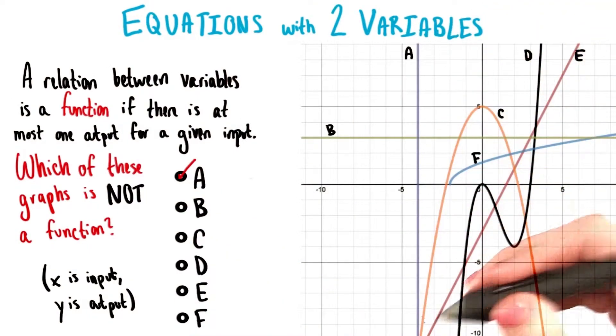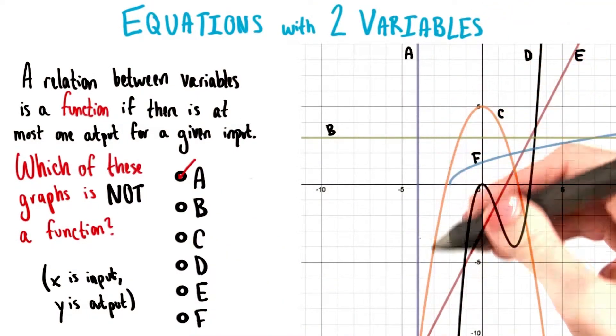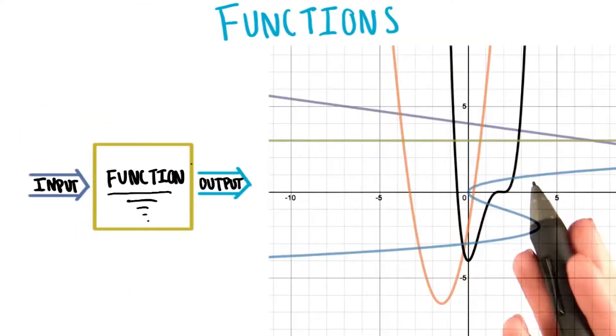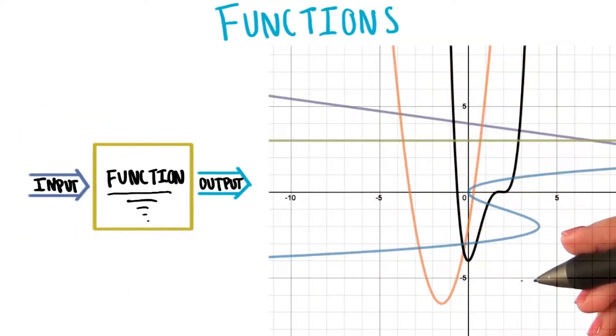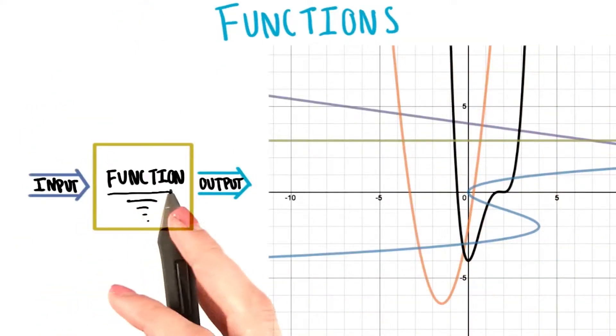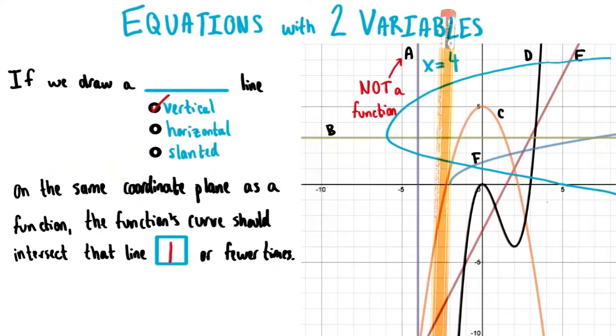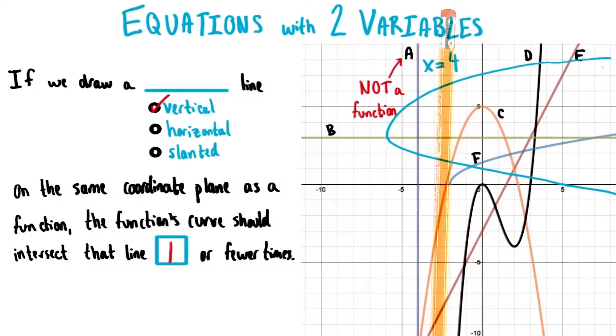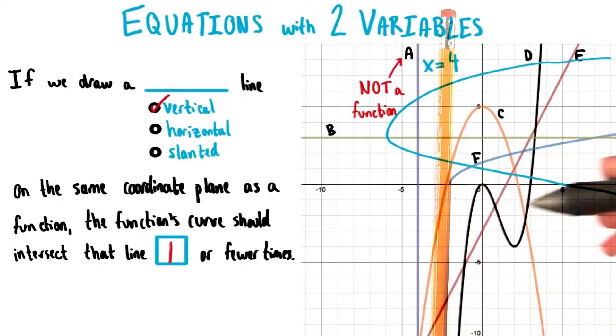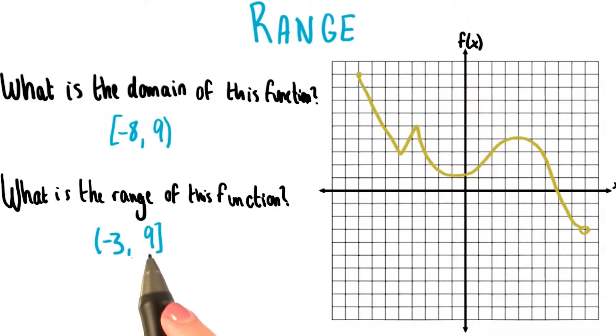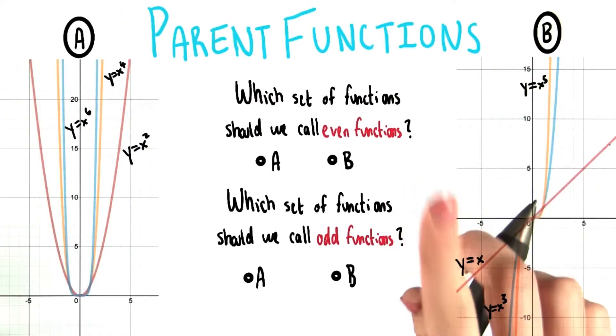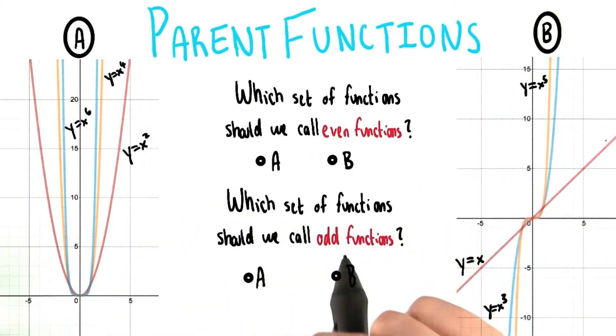We began by developing an understanding of functions. We asked the question, what is a function? As you learned, a function pairs each input value with exactly one output value, which means we can figure out if a graph represents a function by using the vertical line test. We then looked at domain and range, as well as explored what it means for a function to be either even or odd.